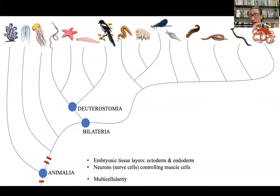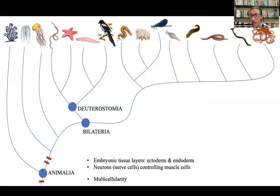Here are some more synapomorphies — derived characters on our phylogeny, and we're going to talk a lot more about these things next week. Jellies and bilaterians share features to the exclusion of sponges. When there are embryos, there are two tissue layers — an ectoderm on the outside of the body and an endoderm on the inside of the body. That endoderm lines the digestive cavity in most of these early animals. All these animals also share neurons — actual cells explicitly controlling muscle movement by electrical signals. Sponges don't have neurons; jellies have pretty simple neurons.